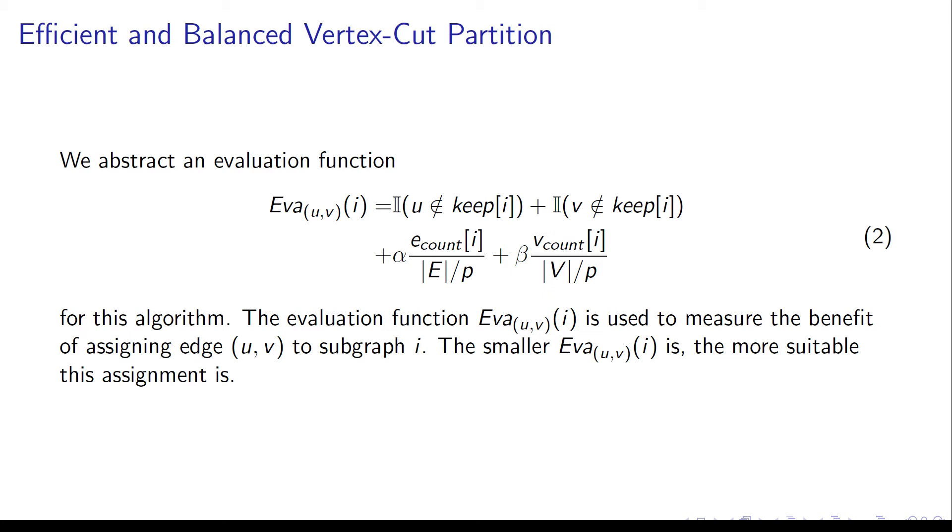Adding new vertex to subgraph brings more difficulties for synchronizing vertex state and more messages. So the first two terms measure whether this assignment will create new vertex. The later two terms are used to balance the edges and vertices among all subgraphs.